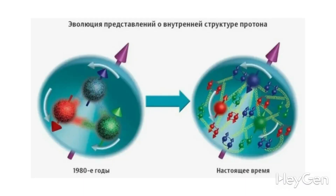But in reality, it turned out that inside the proton, there are not only quarks — not only the up and down quarks. Instead of just two up quarks and one down quark, scientists said that there are also various other particles inside the proton. These two up quarks and one down quark are actually not the complete structure of the proton.